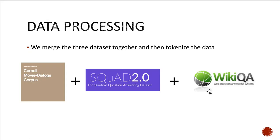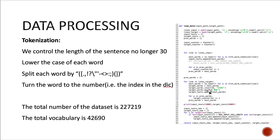So then we merge the three datasets together and then tokenize the data. We control the length of the sentence no longer than 30. This is because that there are many sentences which have very long sentences, like more than 100 words.